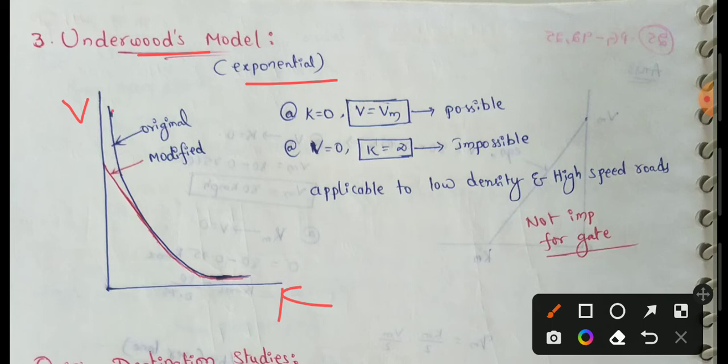The original curve is a curved shape. The Modified Underwood curve is a linear shape.